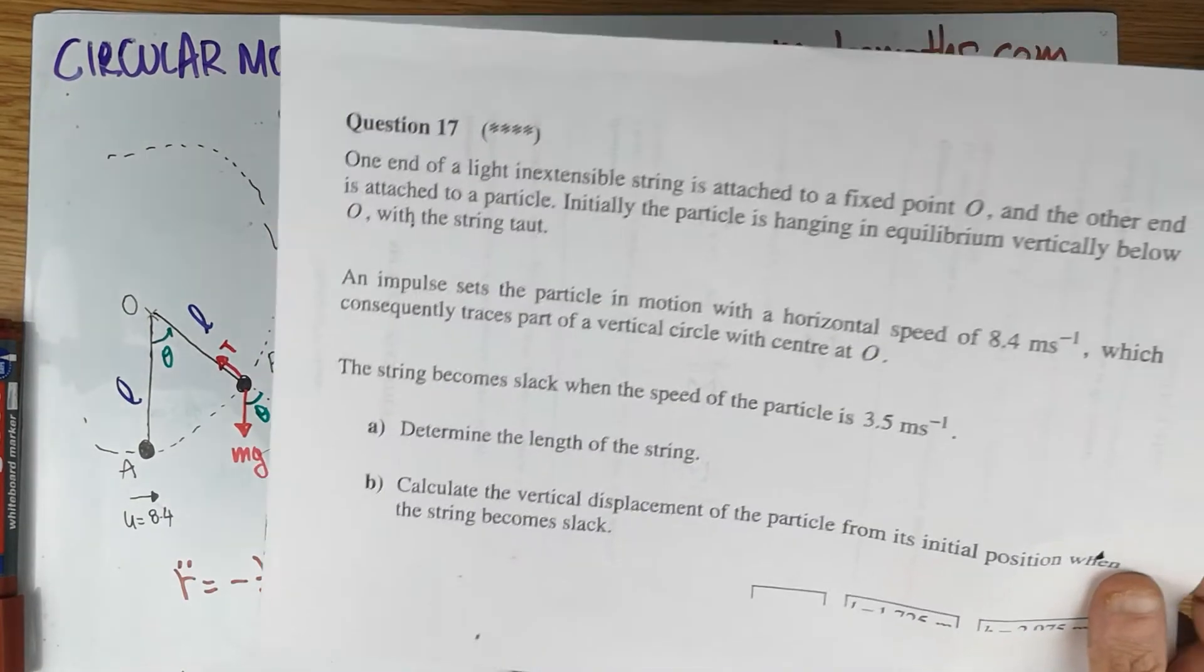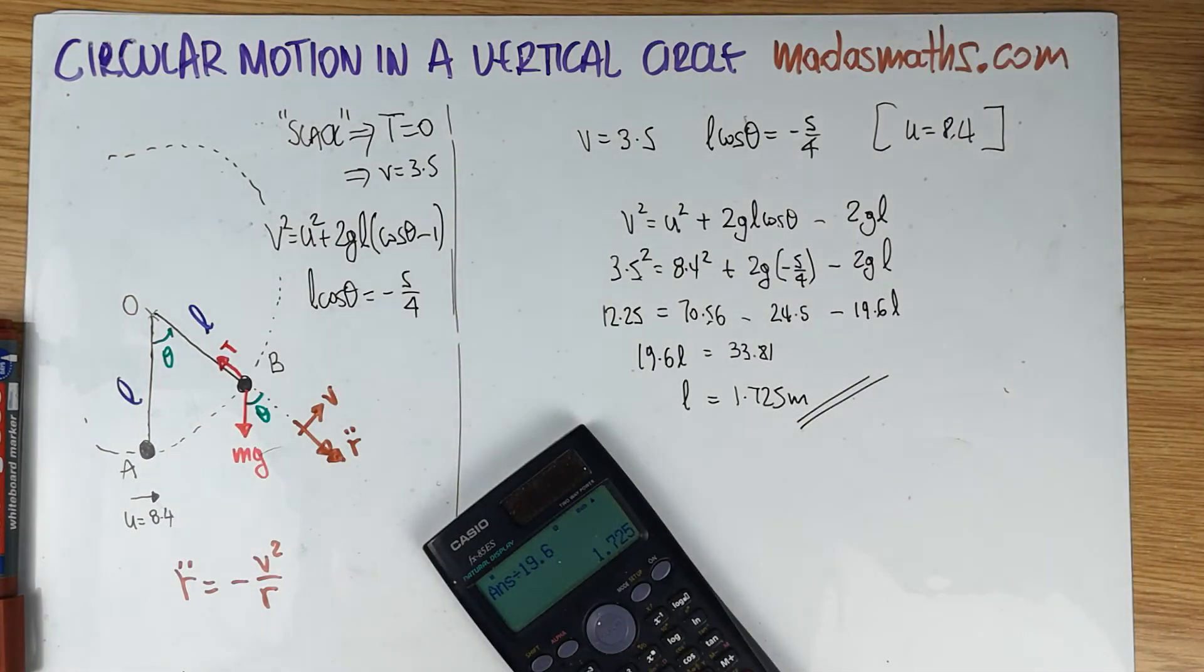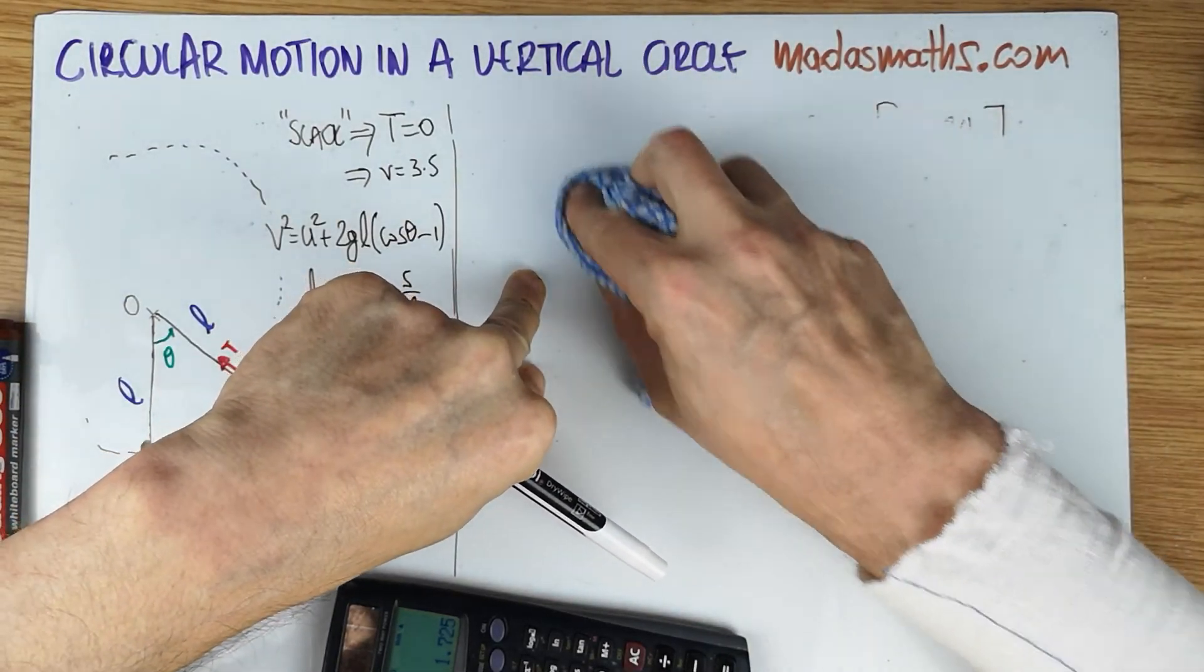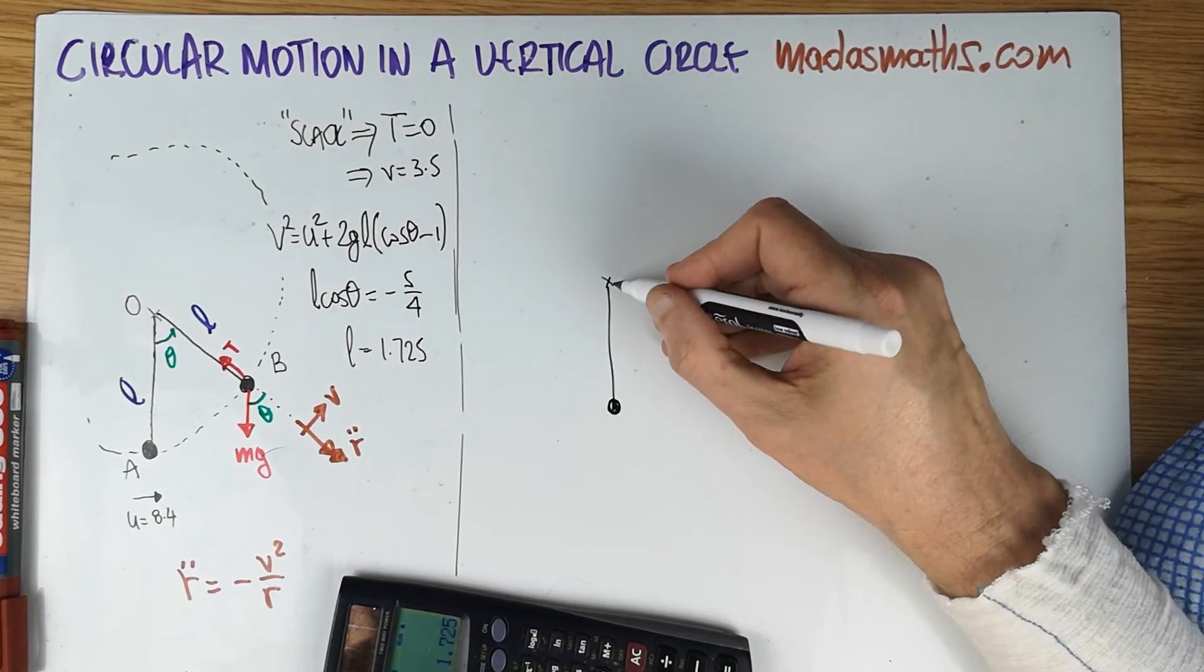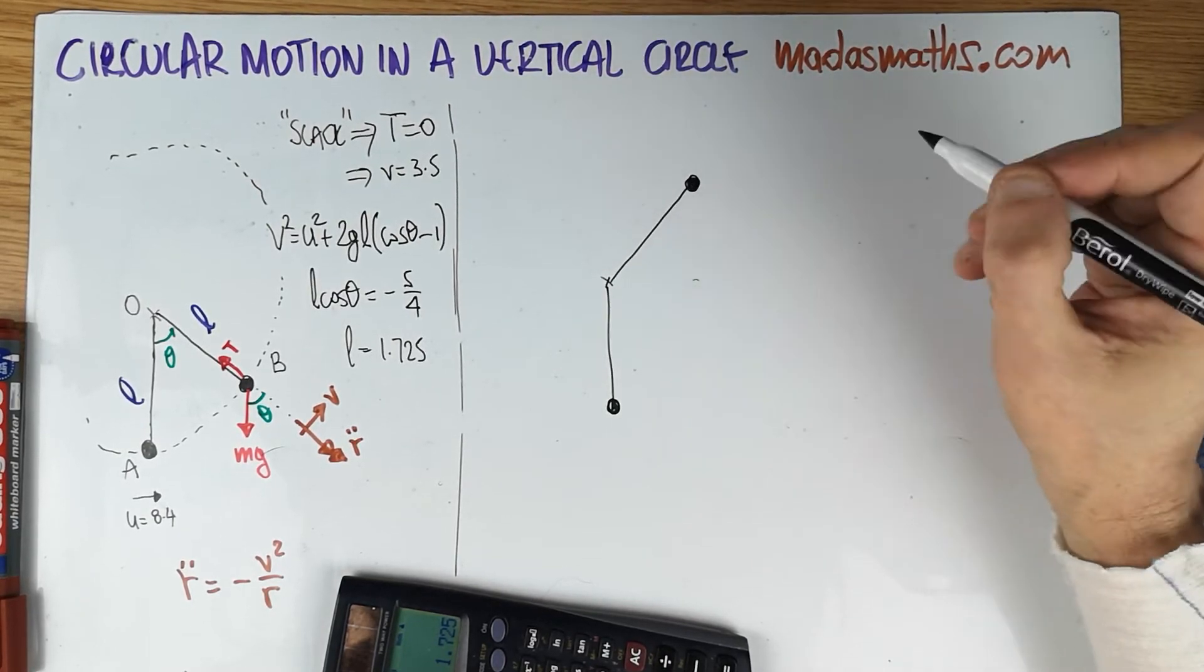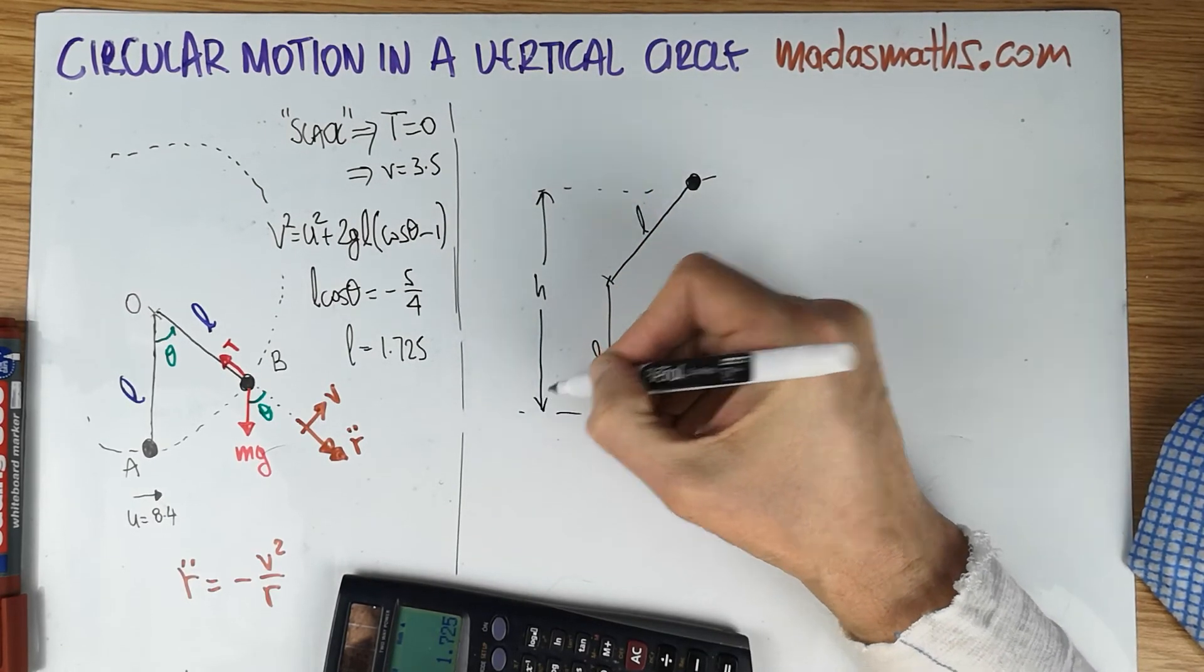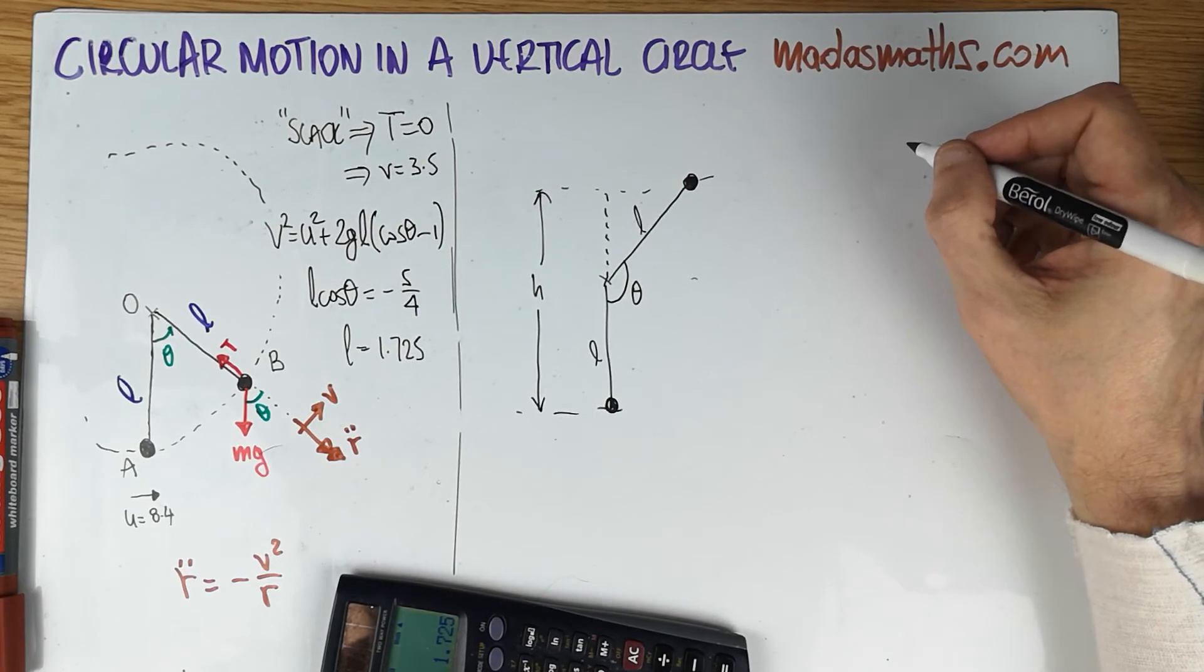There's a part B in the question. That's actually a lot quicker. Calculate the vertical displacement of the particle from its initial position when the string becomes slack. Let's mark the L here as well. L was found to be 1.725. This is actually quite an easy problem now. So I'm going to just draw a picture to make sure we understand what is asking. So if we look at the particle, it was projected from here and it goes all the way somewhere up to here and all of a sudden the string goes slack and it drops. So let's say this is the position when the string becomes slack. And what we know, so that's L and that's L, and it's asking for the vertical displacement. So it's asking for this length here, H. And this is the theta.